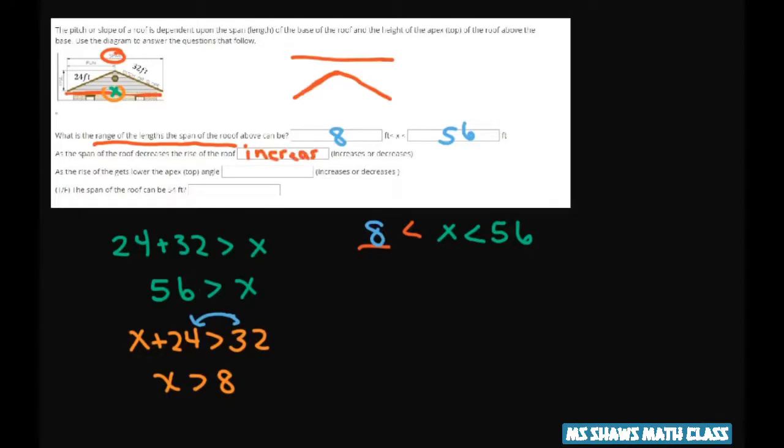All right. As the rise, this part, gets lower. So here's your rise right here. If the rise gets lower, you still have the 24 and 32. So it's just going to spread out more because the rise is smaller. So that means that angle here is going to be bigger than this angle. So that's also increases.